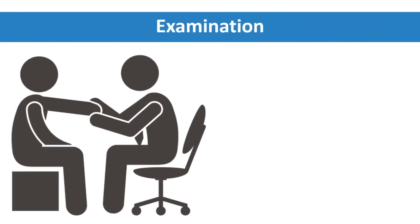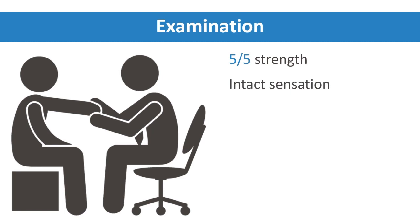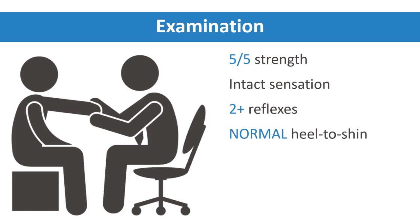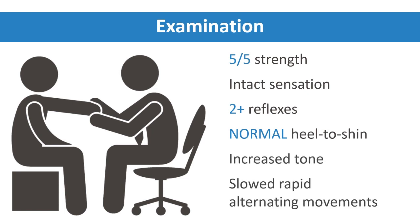On examination, you note he has 5 out of 5 strength in his legs, intact sensation to pinprick, temperature, vibration, and proprioception, 2-plus reflexes, and a normal heel to shin test. He has increased tone and slow rapid alternating movements with the right hand.